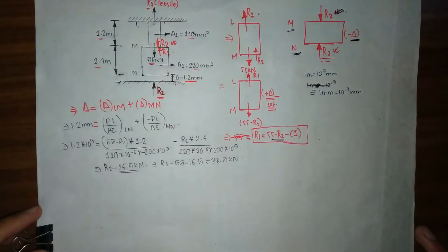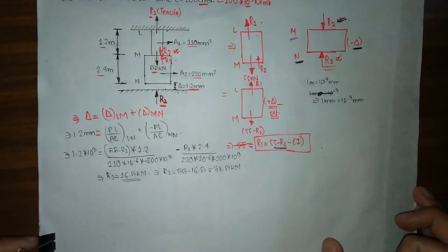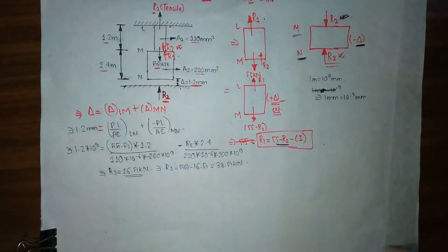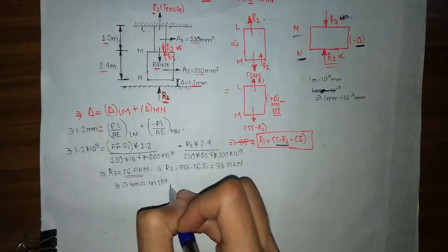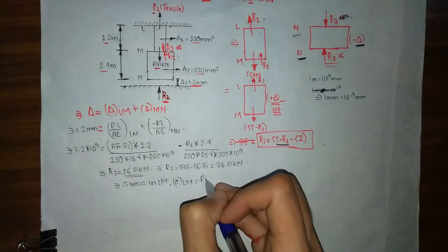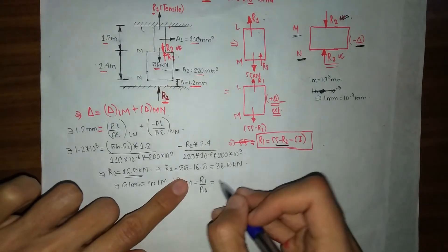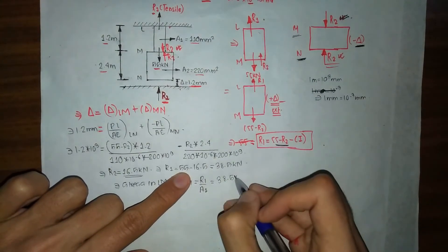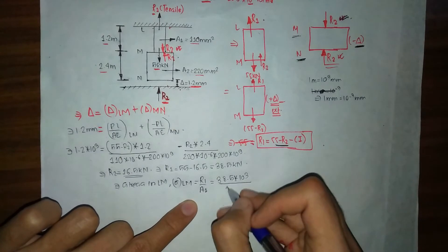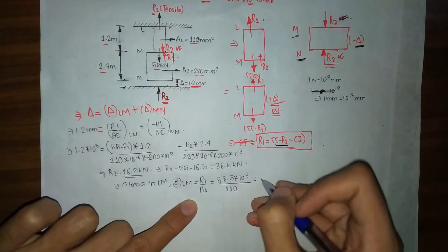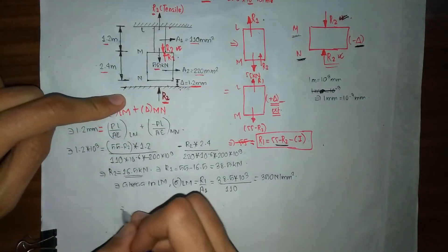Next, we need to find the stresses in the bar — for both the LM and MN portions. Stress in LM, denoted sigma_LM, equals R1 divided by A1. Since sigma equals P/A, our R1 is 38.5 kN (converted to newtons: 38.5 × 10³), divided by A1 of 110 mm². This gives sigma_LM equals 350 N/mm².